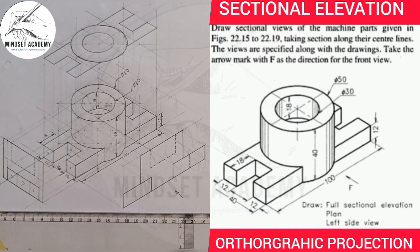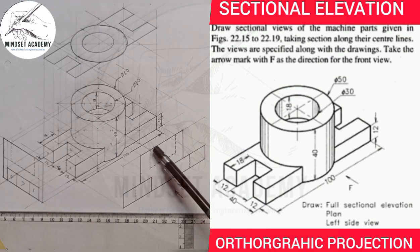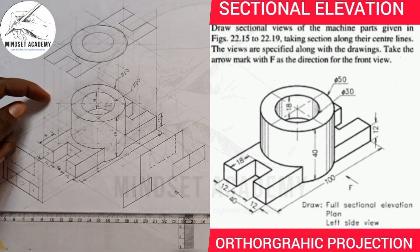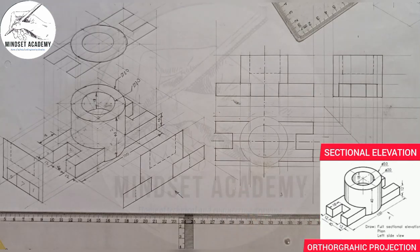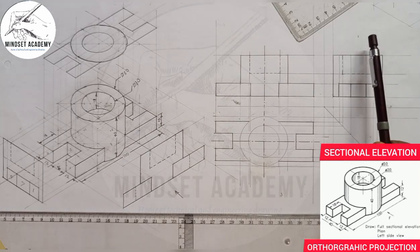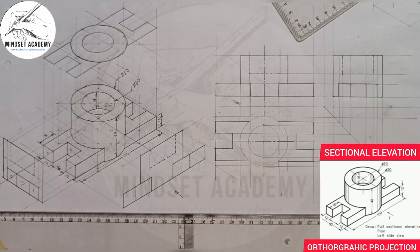Without sectioning, this is how the orthographic projection of this diagram looks. This is in first angle projection. This is the front elevation, looking at it from this side. This is the plan, looking at it from the top. This is the end view, looking at it from the side. I drew these in the previous video — towards the end of this video you'll see a link leading to how to draw them. In this video we want to section this given view.